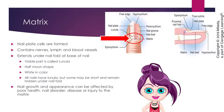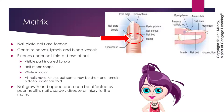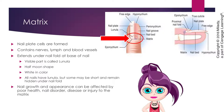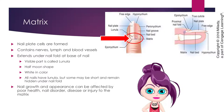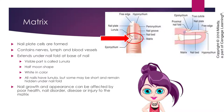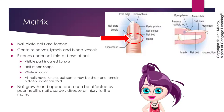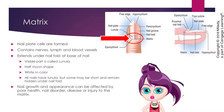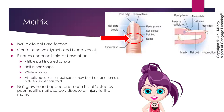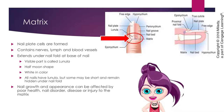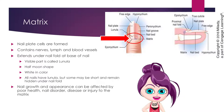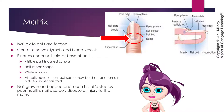The matrix is where the nail plate cells are formed. The matrix contains nerves, lymph, and blood vessels, and extends under the nail fold at the base of the nail. The visible portion of the matrix is called the lunula — a half-moon shape that is white in color. All nails have a lunula, but some may be short and remain hidden underneath the nail fold.